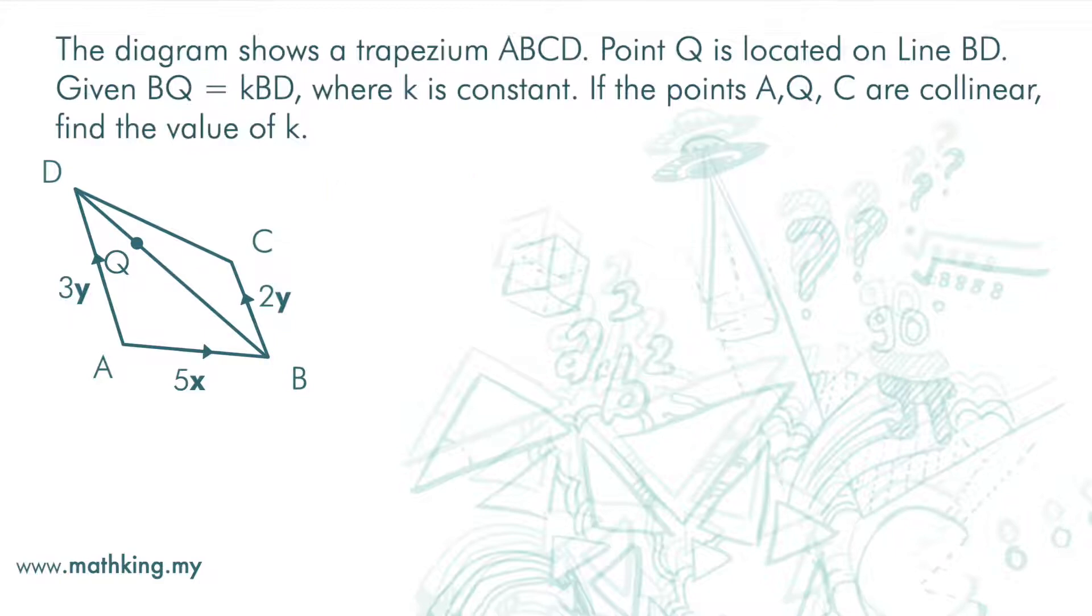Now what the question is asking is, what is the value of K so that the position of Q is such that A, Q, C forms a straight line? We have learned that if A, Q, C are on a straight line, then vector AQ must be parallel to vector AC. So we get AQ equals RAC. This is the first step to solve this question.